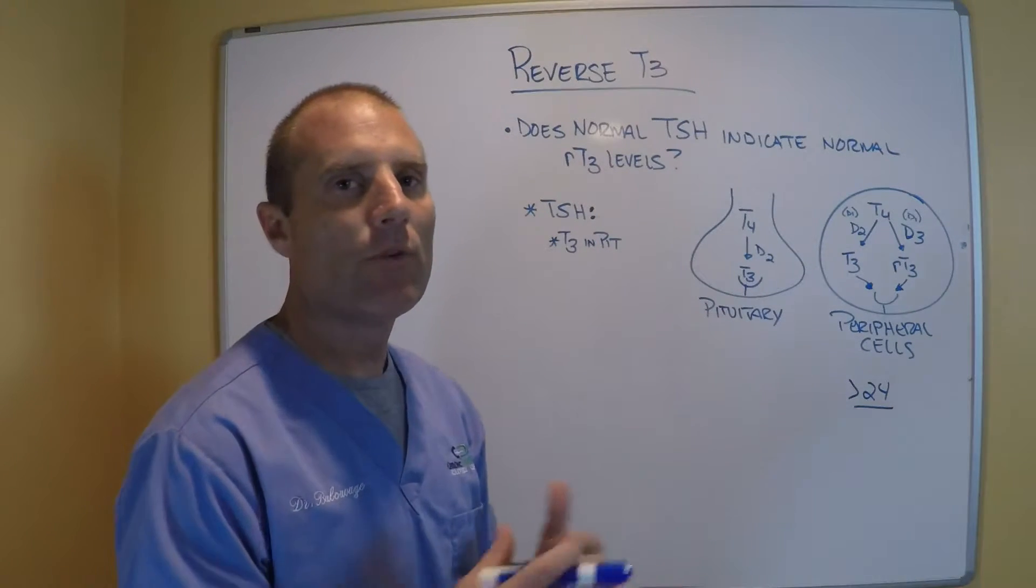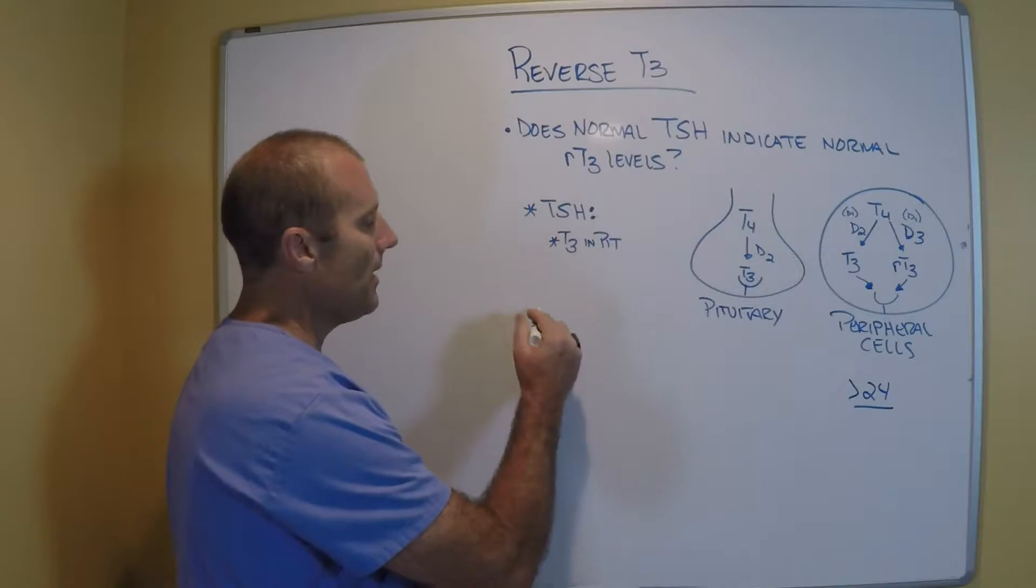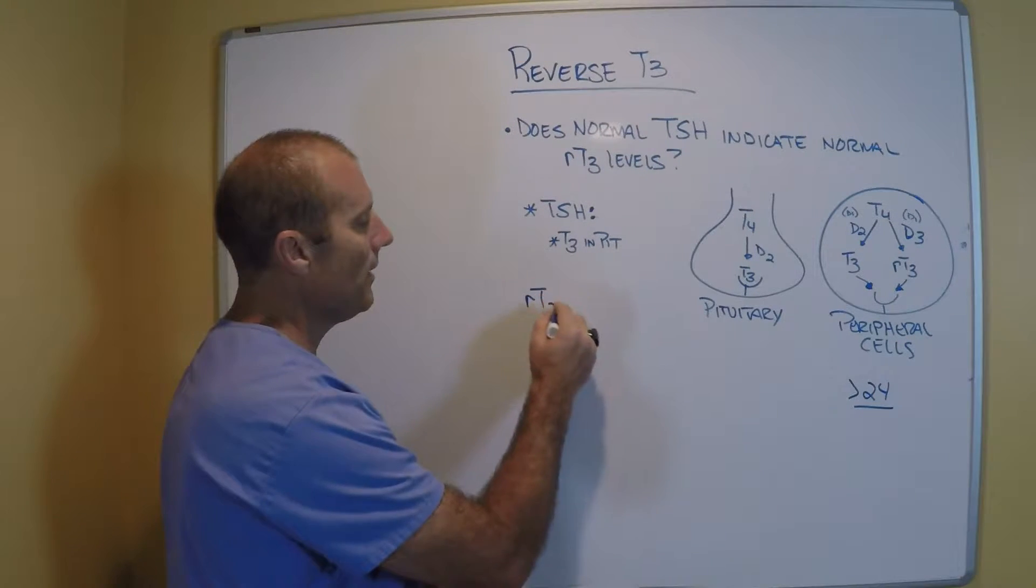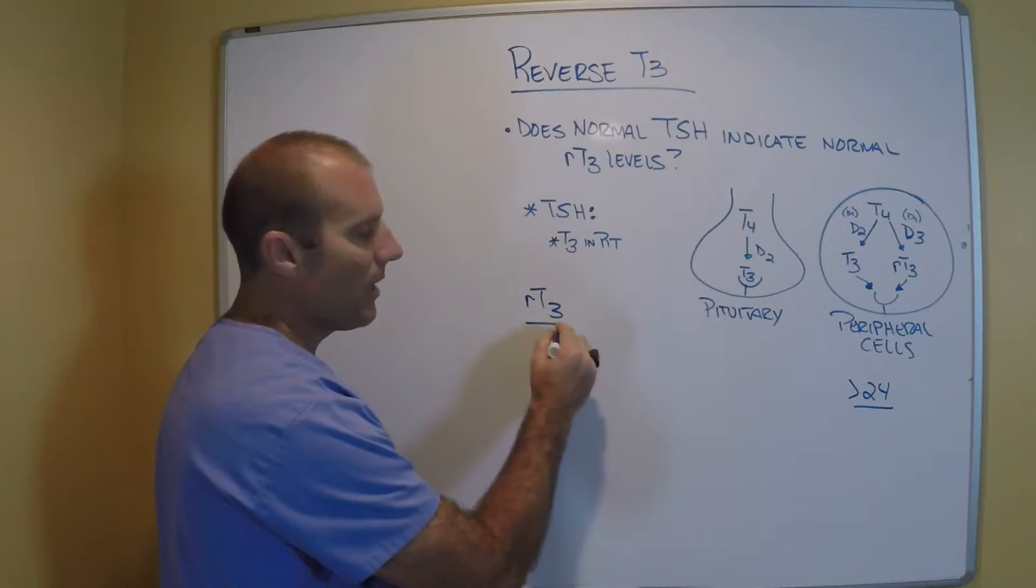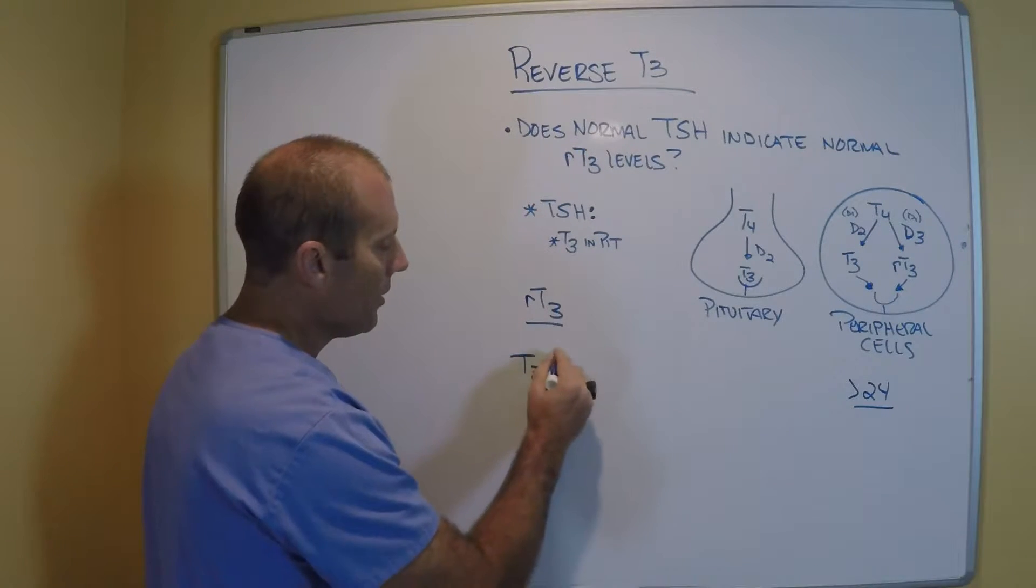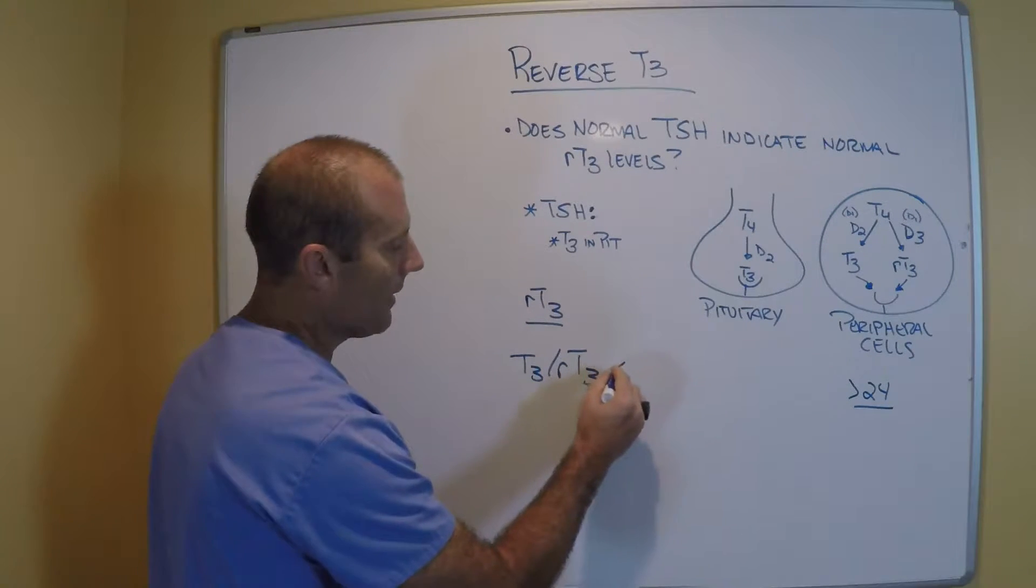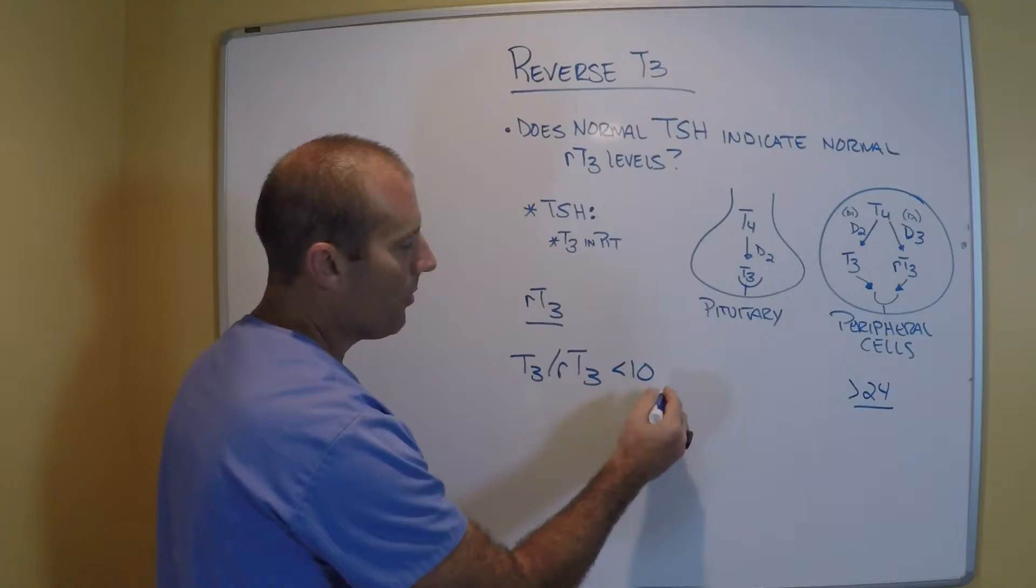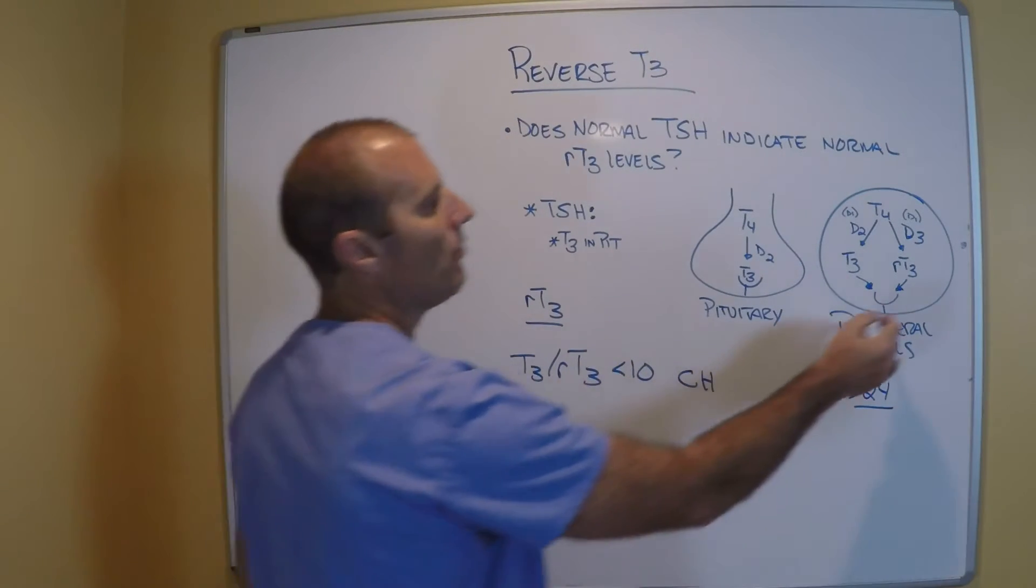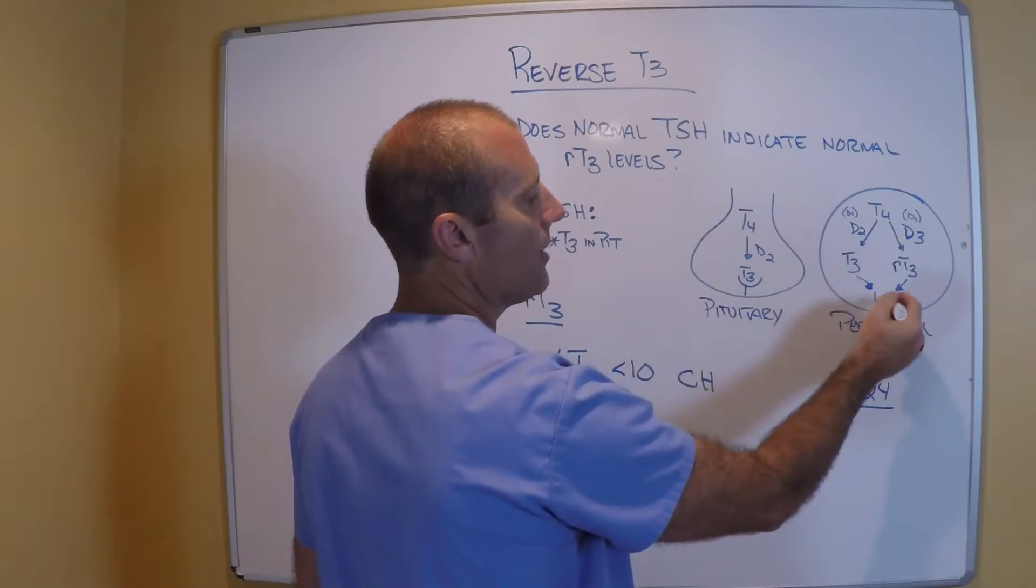Now, can you just take the reverse T3 as the value only? No, because somebody may still have normal amounts of reverse T3, but it's not just about how much T3 they make. It's about the T3 to reverse T3 ratio. If that ratio is less than 10, then the person has cellular hypothyroidism.